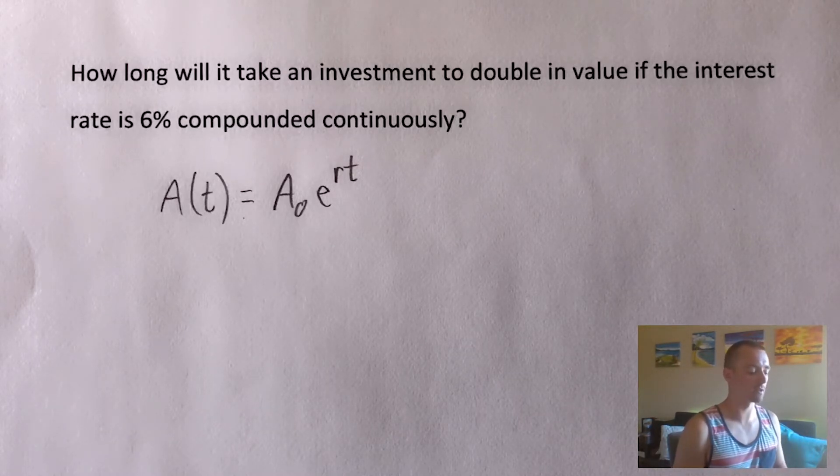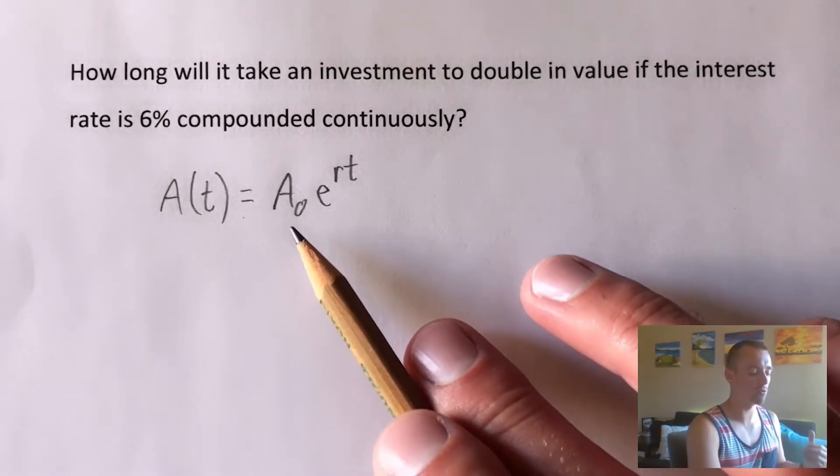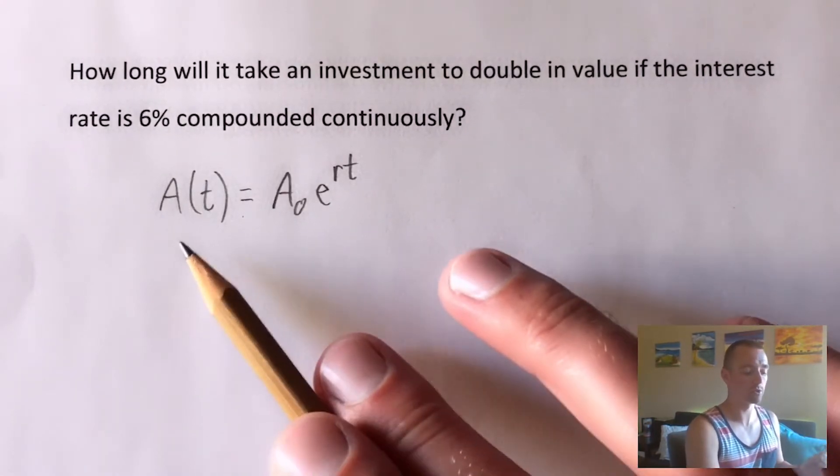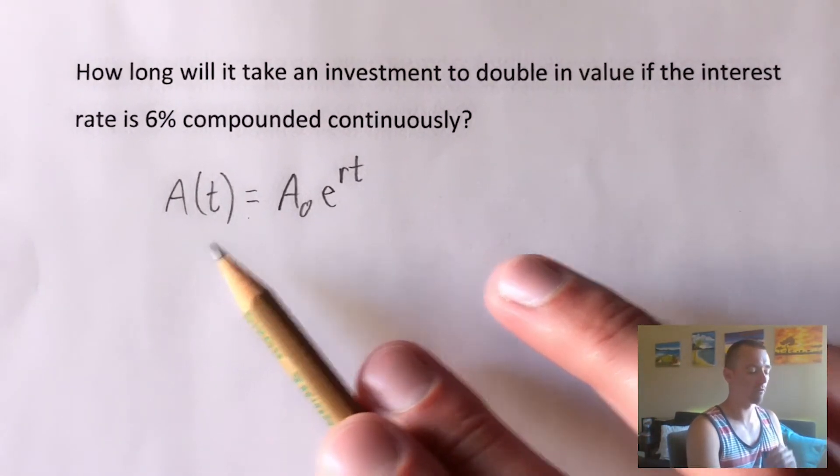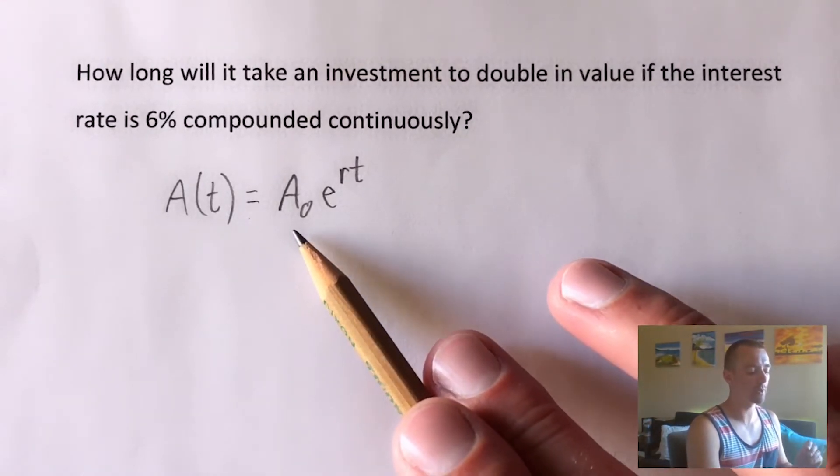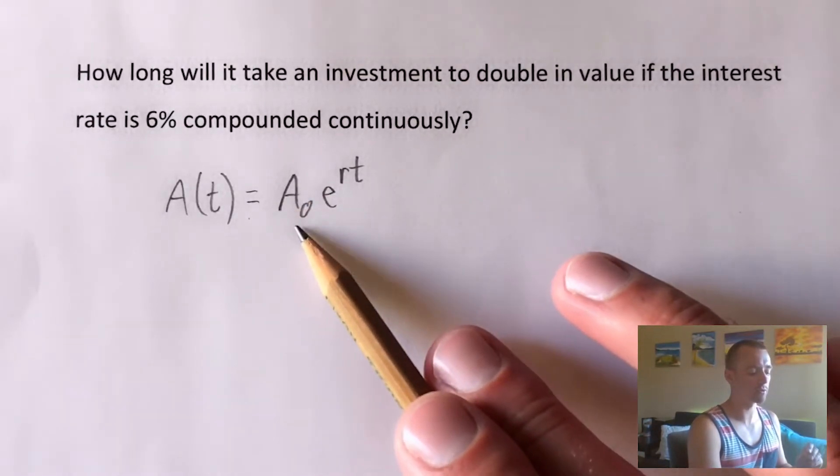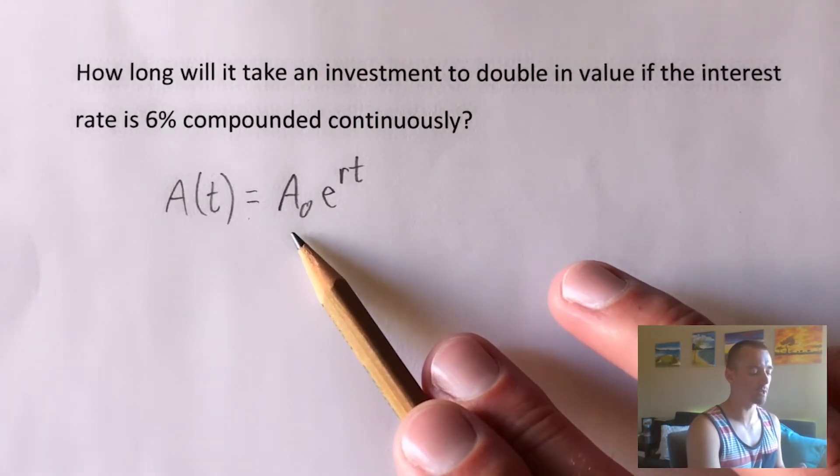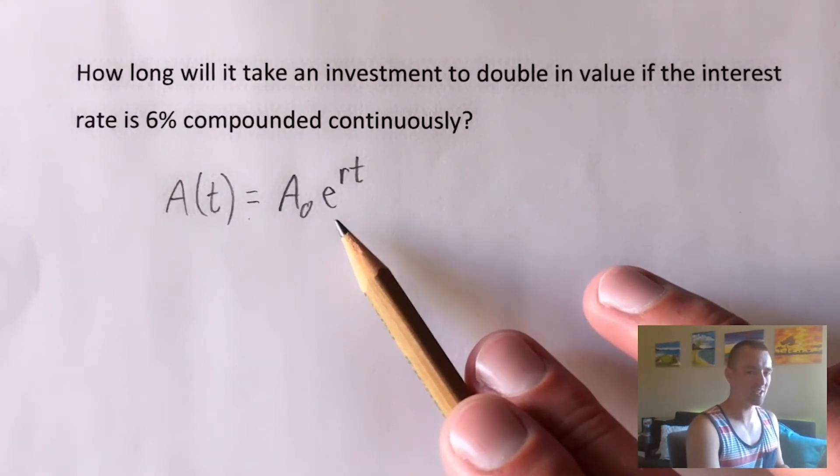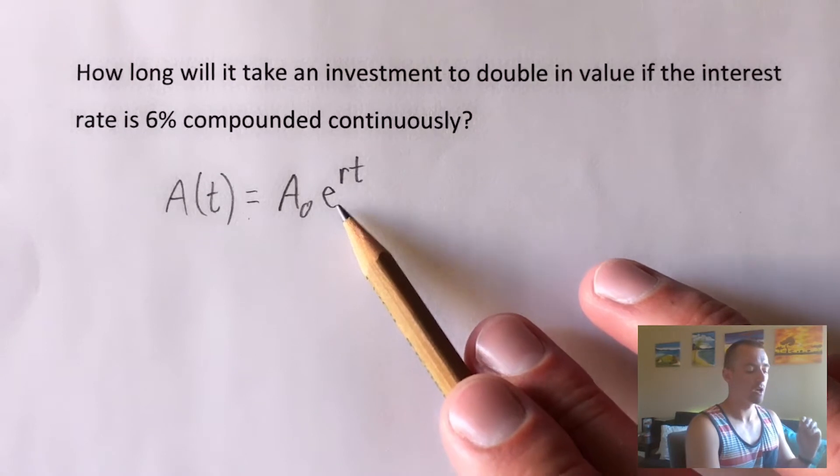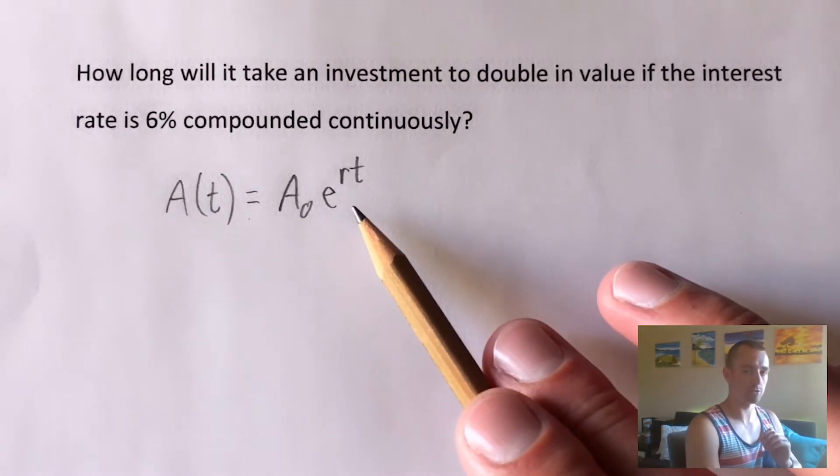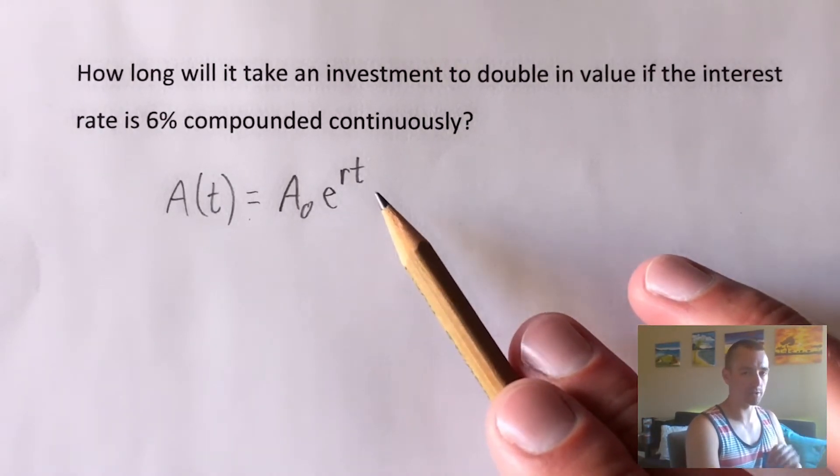So pretty much what that's going to look like is we're going to use this formula here, which tells us the value of our investment at time t, which depends on our initial value. So A sub zero is just the initial amount of money that's in it. E is always going to be E, it's like 2.7. R is the interest rate. And then t is the amount of time that's passed.